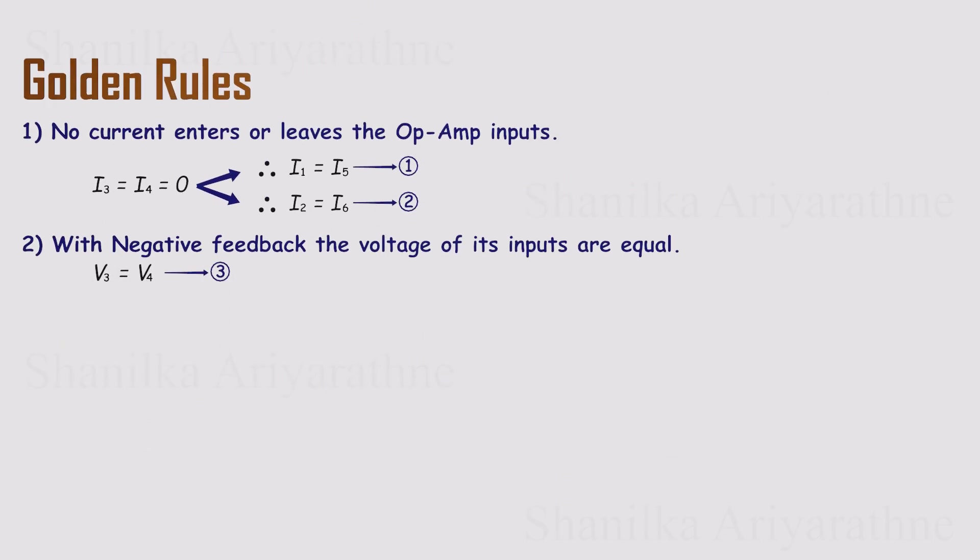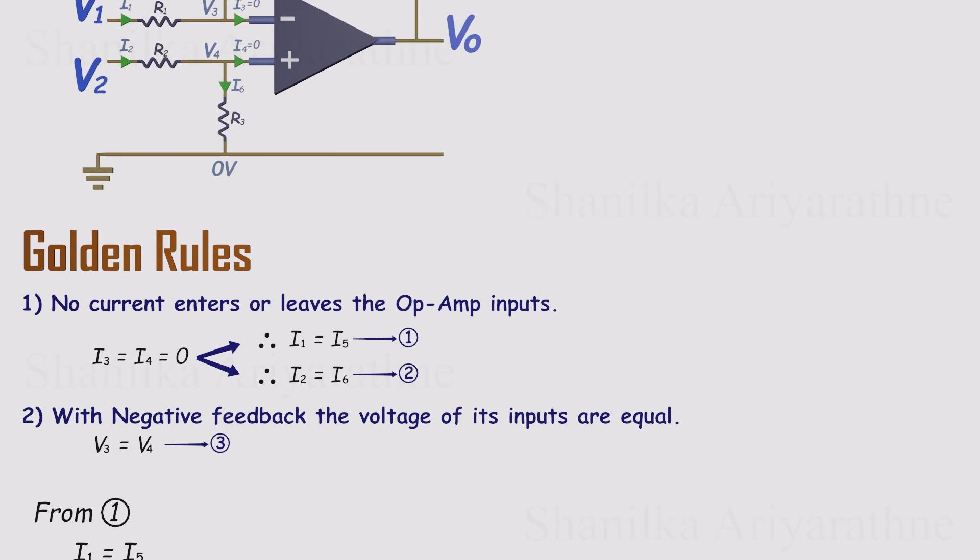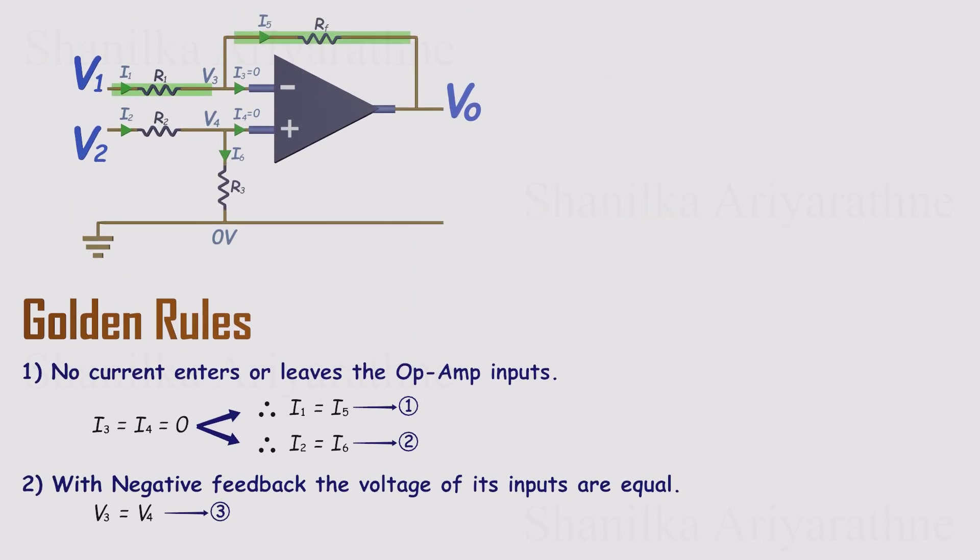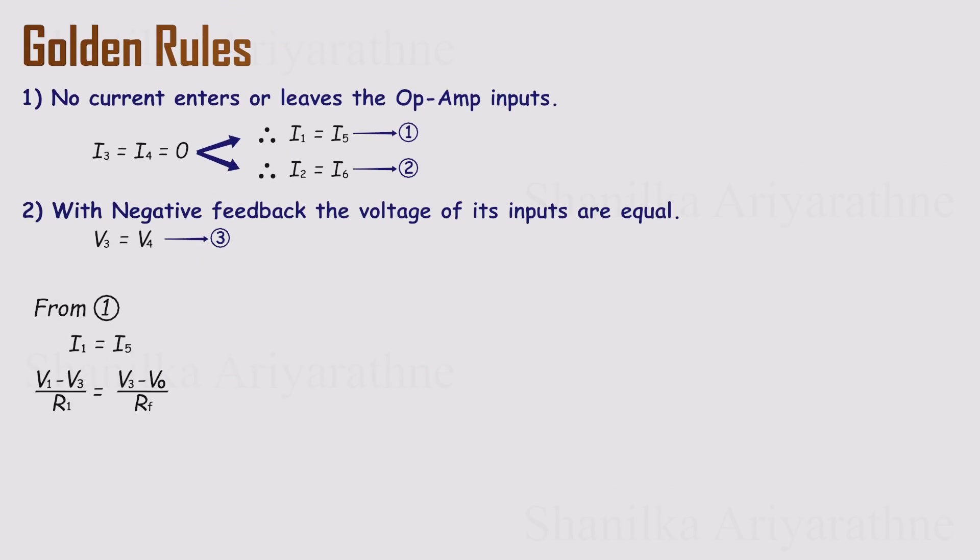Let's start with equation 1. I1 equals I5. Looking at the circuit, I1 flows through resistor R1 and I5 flows through the feedback resistor RF. By Ohm's law, each current can be written as the voltage difference across its resistor divided by the resistance. Substituting those expressions into the equation gives us a relationship for V3, the voltage at the inverting input.